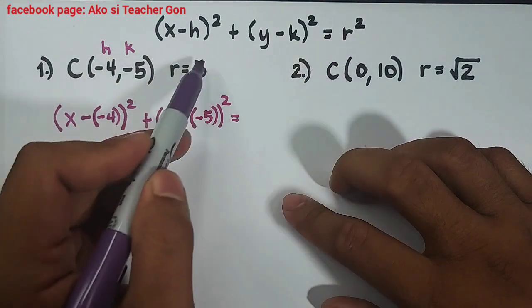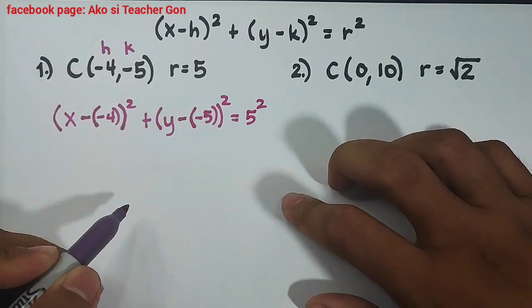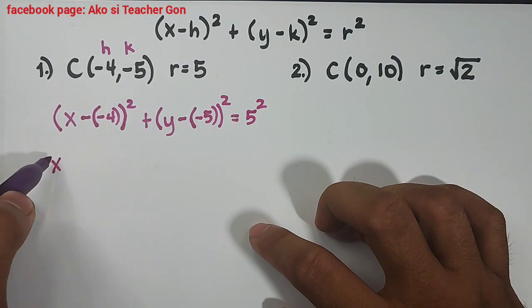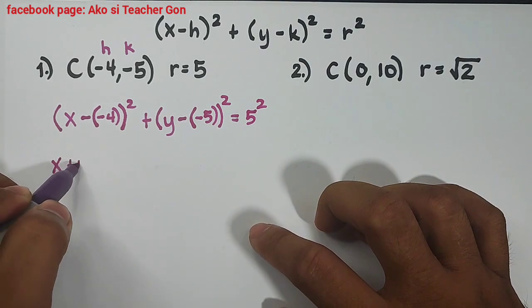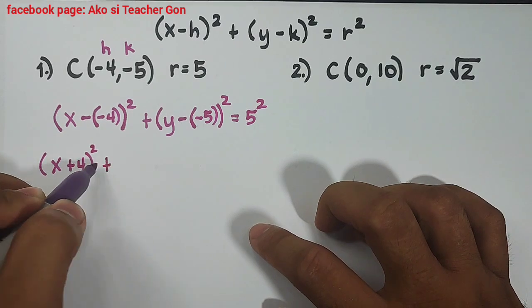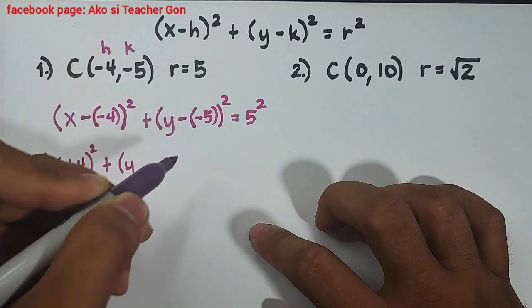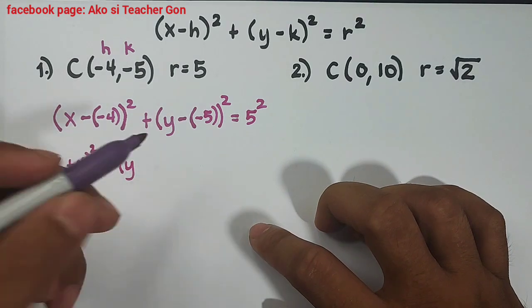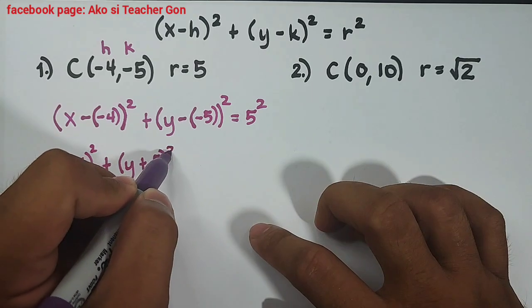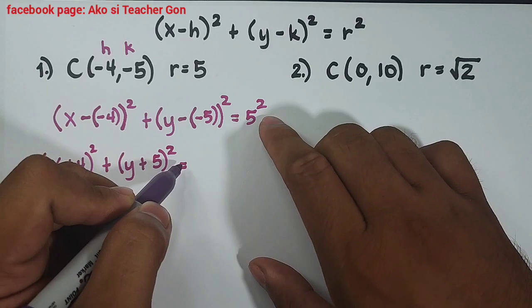We will simplify this. We have x, negative times negative is positive, plus 4, square, and then plus this part y, negative times negative is positive, so we have plus 5 raised to the second power is equal to your 25. 5 square which is equal to 25.